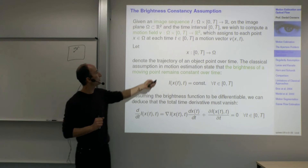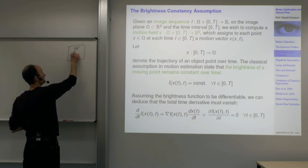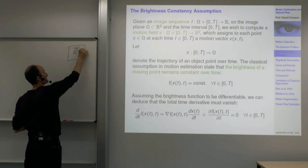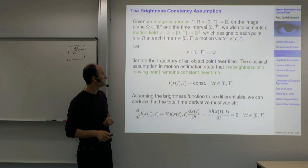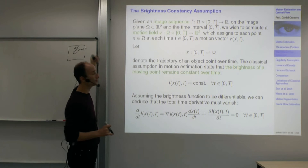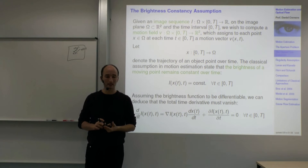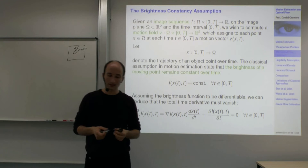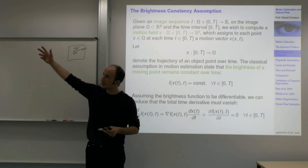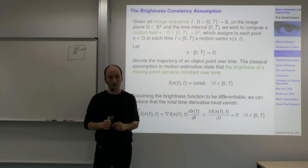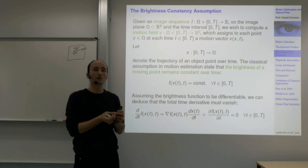Let's assume we have a point at time t at position x(t), and at time t+1 it is somewhere else. The assumption we make is that the brightness of that point remains the same over time. This brightness constancy assumption is the key assumption in correspondence estimation. Whether it's a good assumption is debatable — illumination can change — but as an approximation it's usually pretty good.